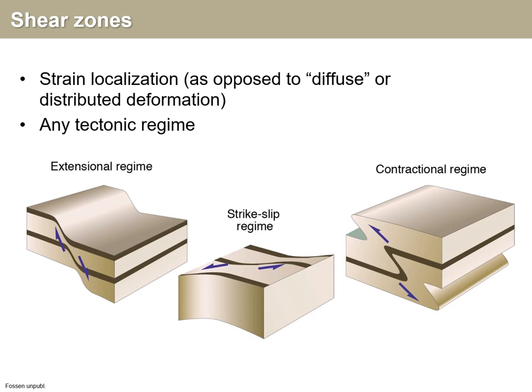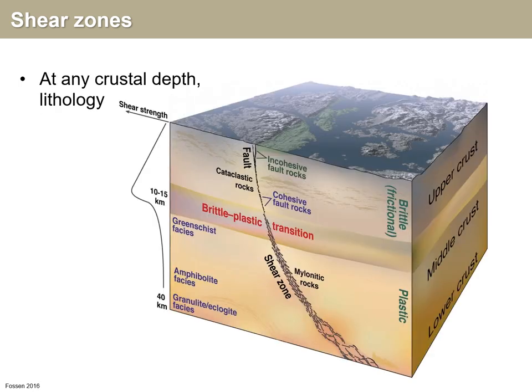So we're talking about strain localization, which is a process producing shear zones, as opposed to distributed diffuse deformation in the crust. Shear zones form, of course, in all kinds of tectonic regimes — extensional regimes, strike-slip and contractional regimes. Shear zones are basically everywhere in the middle and lower crust, which is illustrated in this figure, and they appear in many different varieties.